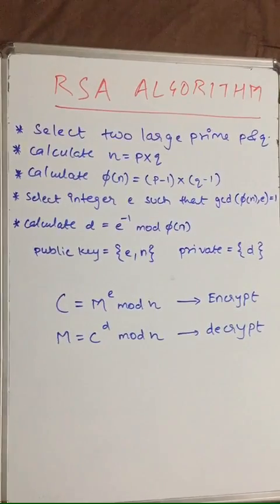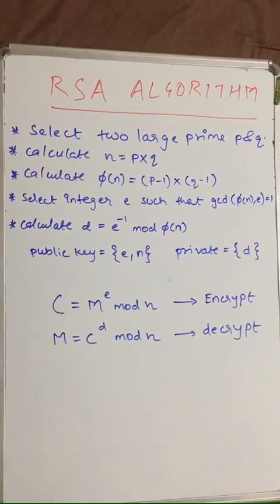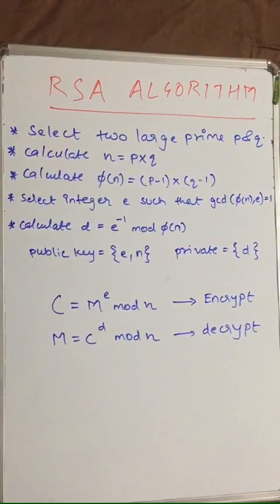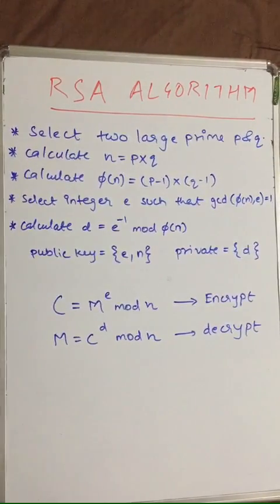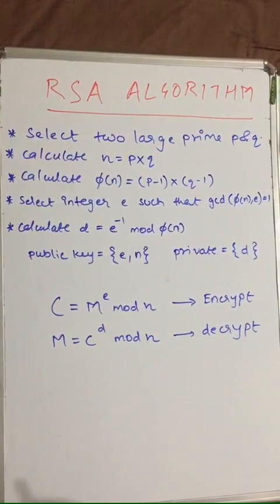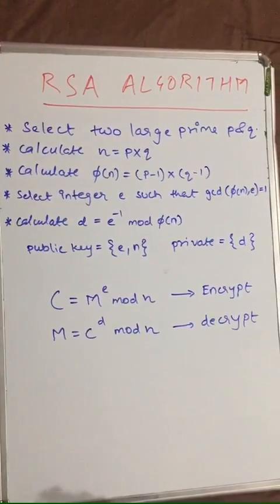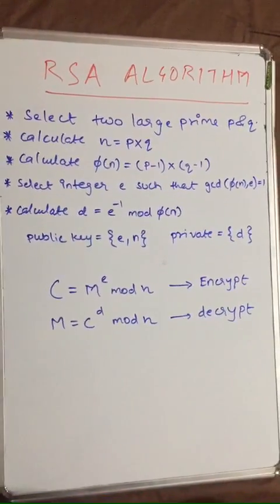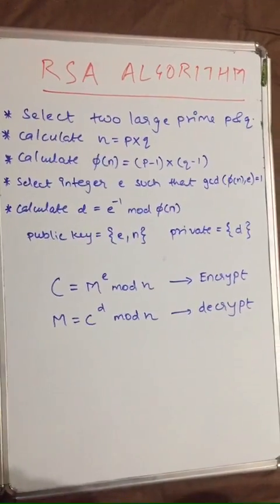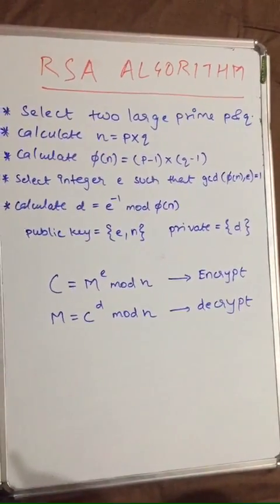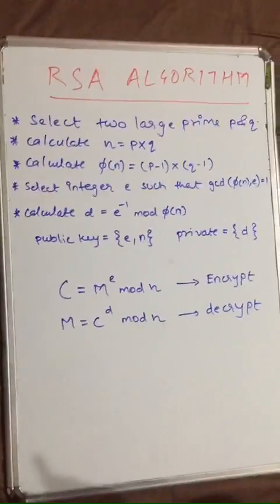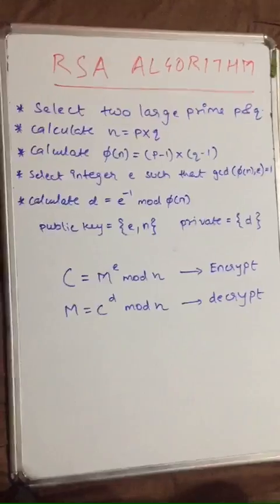To solve the RSA algorithm, let's take the first step: select two large prime numbers P and Q. Step number 2: calculate n, which is equal to P multiplied by Q.